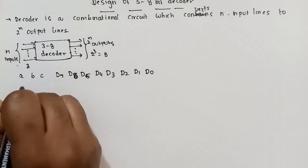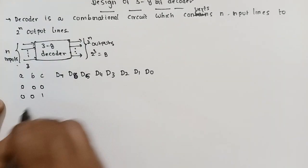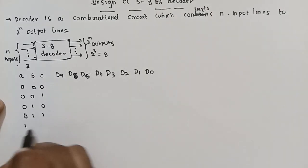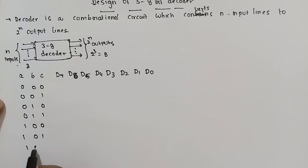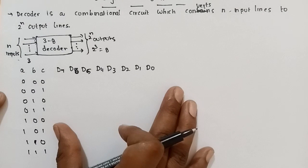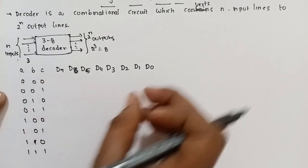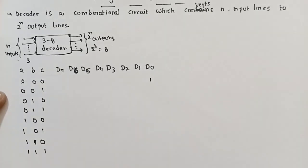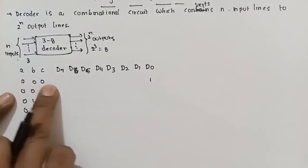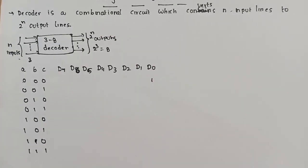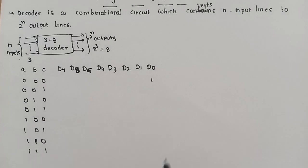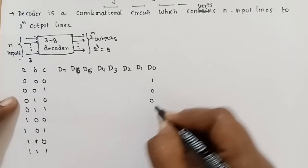Now, when the input is 0, 0, 0, it is D0 output. D0 is 1, and the remaining 7 places have the value 0. When the input combination is D1, the remaining places are 0. When all 3 inputs are 0, the remaining 7 places have value 0.